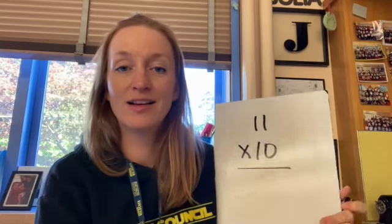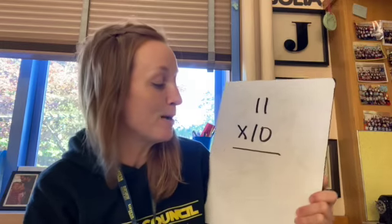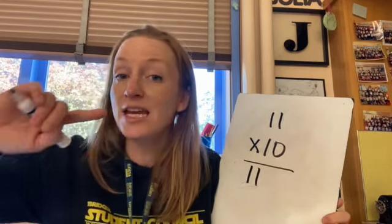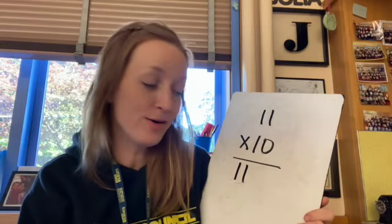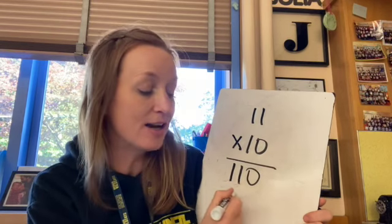But what happens when you get to 11 times 10? Let's look. Here's 11 times 10. Do you remember our strategy for the tens? If you do, you remember that any number times 10 is just that number and then we pop a zero on the end. Here we go. So we know this one too. 11 times 10 is 110.